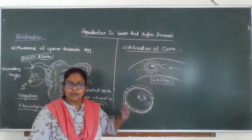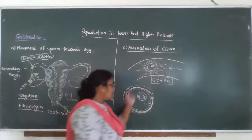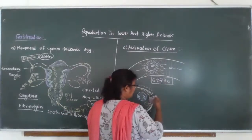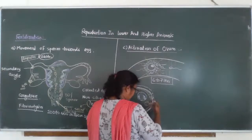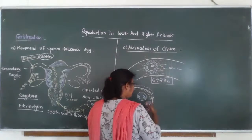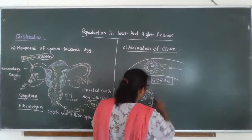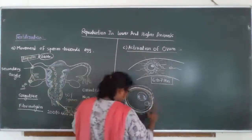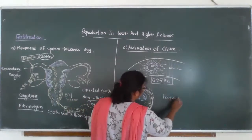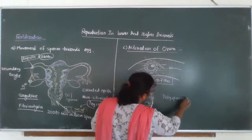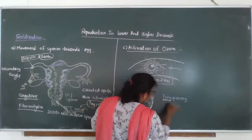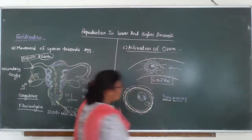This fertilizing membrane, formed after the entry of the one sperm's nucleus into the cytoplasm, prevents polyspermia. Polyspermia means entry or fusion of many sperms. It avoids fusion of many sperms towards the ovum.